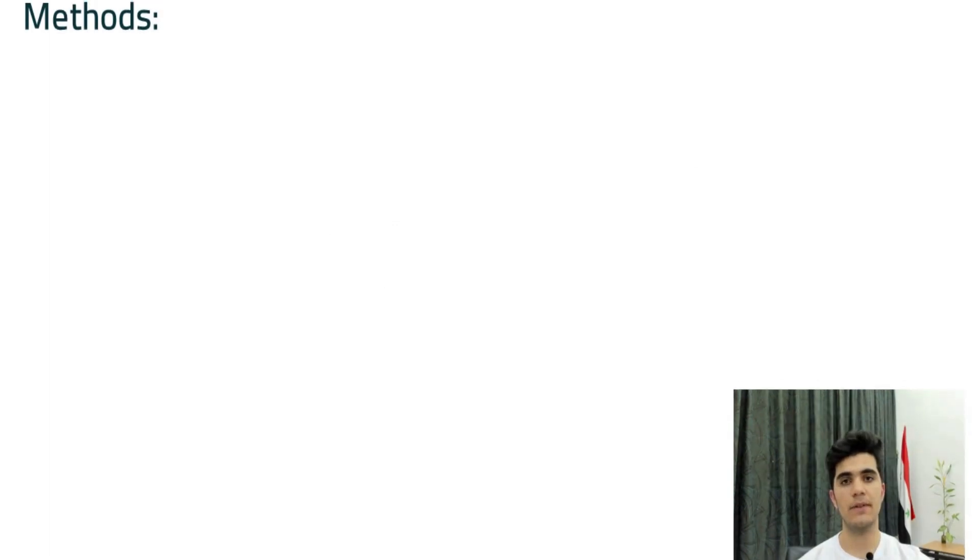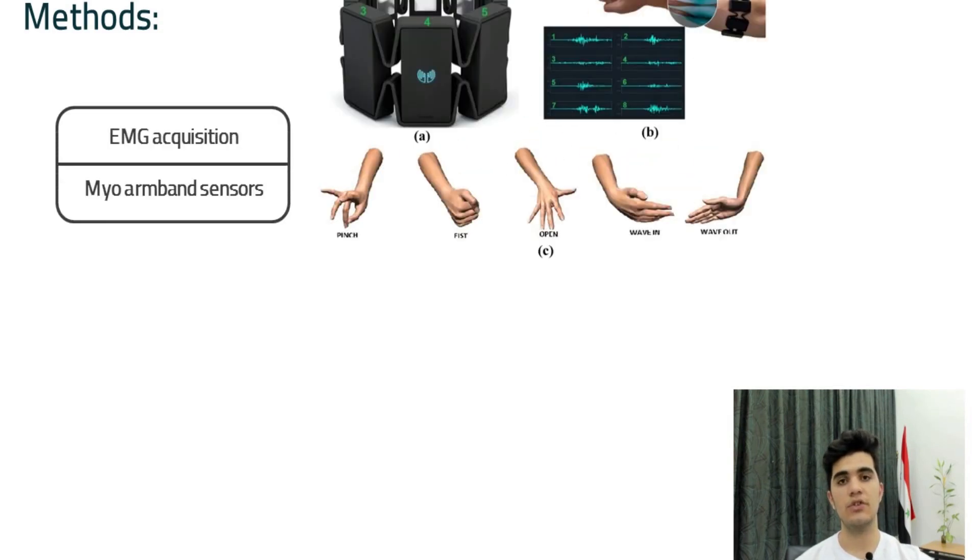Now we move to the Myo armband. To facilitate real-time processing, the Myo armband has been chosen for the acquisition of EMG signals from the forearm. The Myo armband contains eight channels as shown in the figure. These eight channels or sensors receive the EMG signals and send it to another device via Bluetooth.